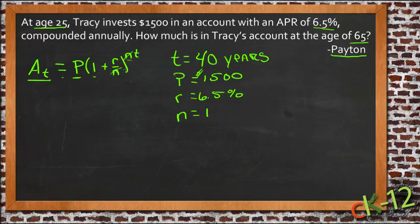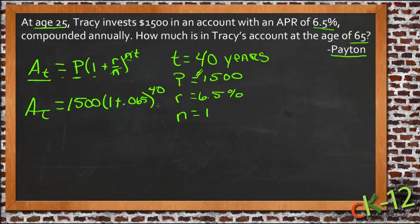So for our purposes, we're going to simplify this expression, and we're going to say that the amount total, the amount that he ended up with, is the principal, $1,500, times 1 plus the rate, and the rate is 6.5%, so that's 0.065, to the power of 40, 40 years.